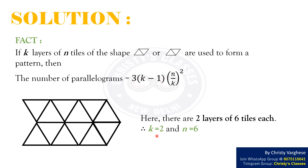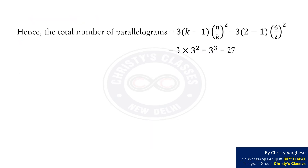Therefore, k equals 2 and n equals 6. By using this formula, we get the total number of parallelograms equals 3 into 2 minus 1 into 6 by 2 squared. That is 3 into 3 squared, which equals 3 cubed, that is 27.